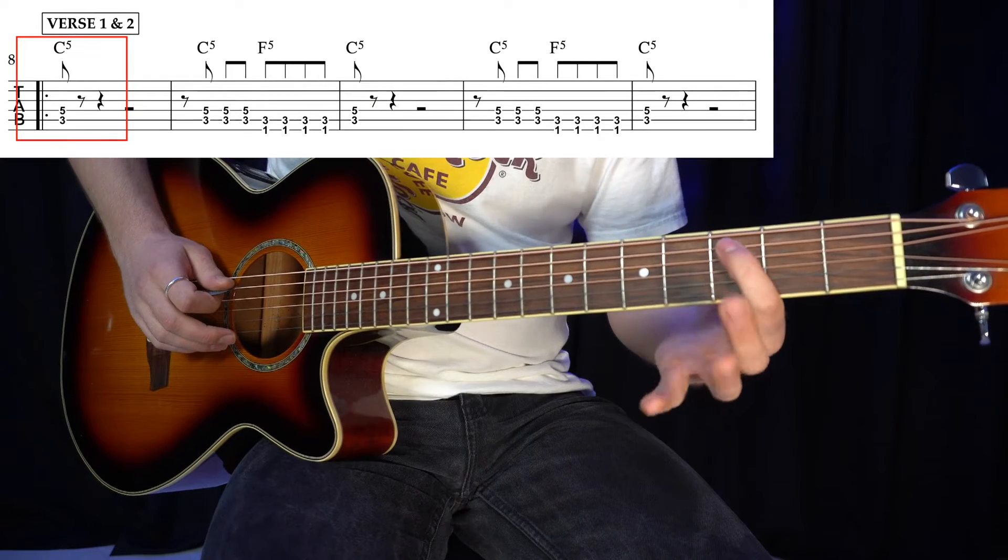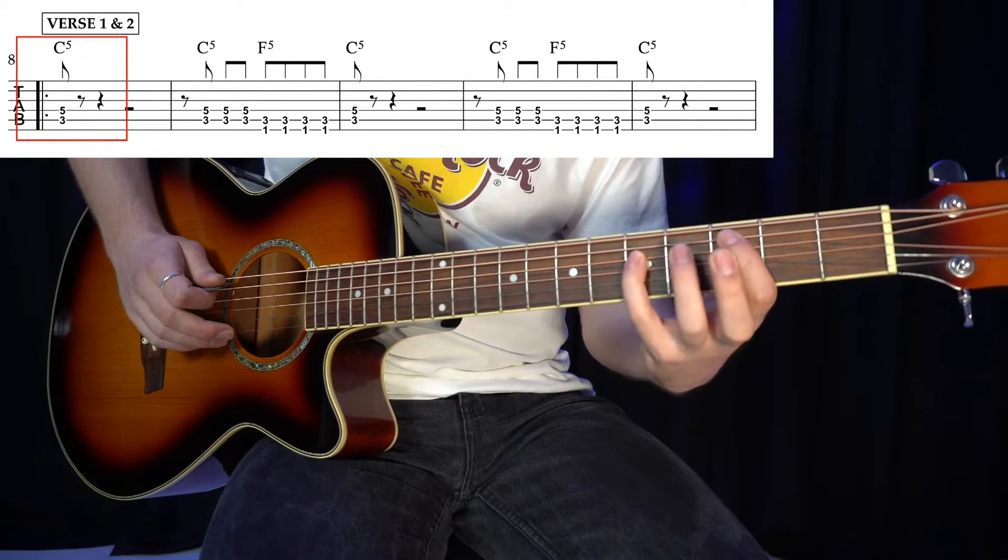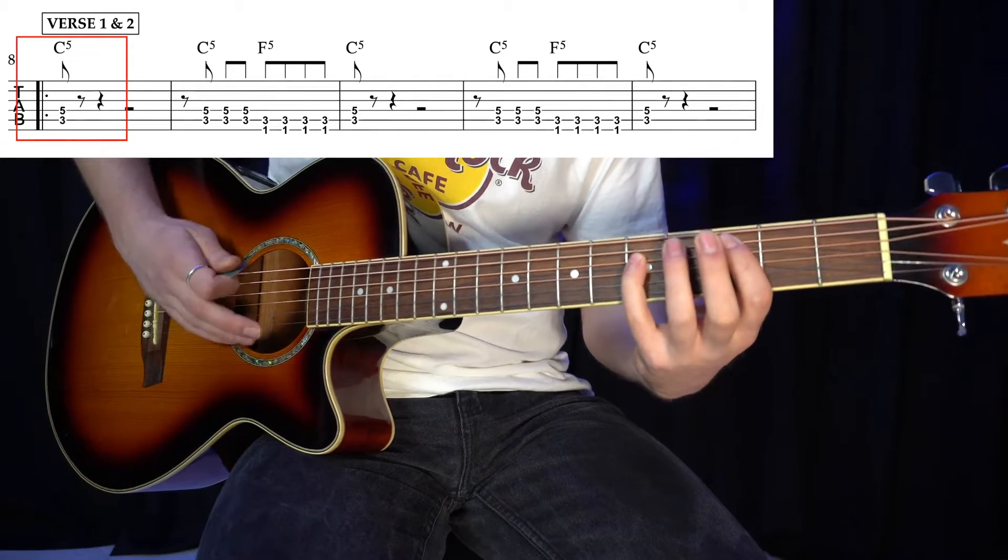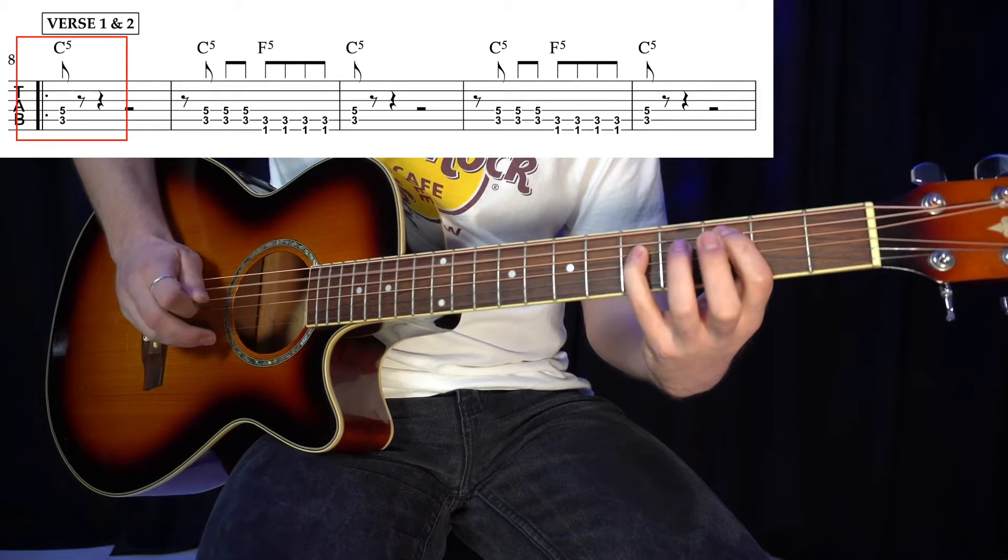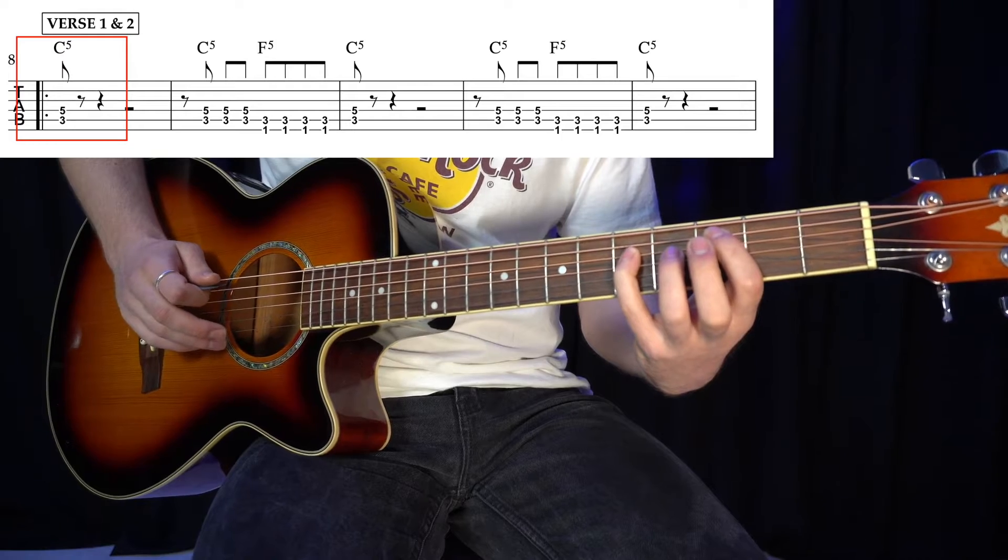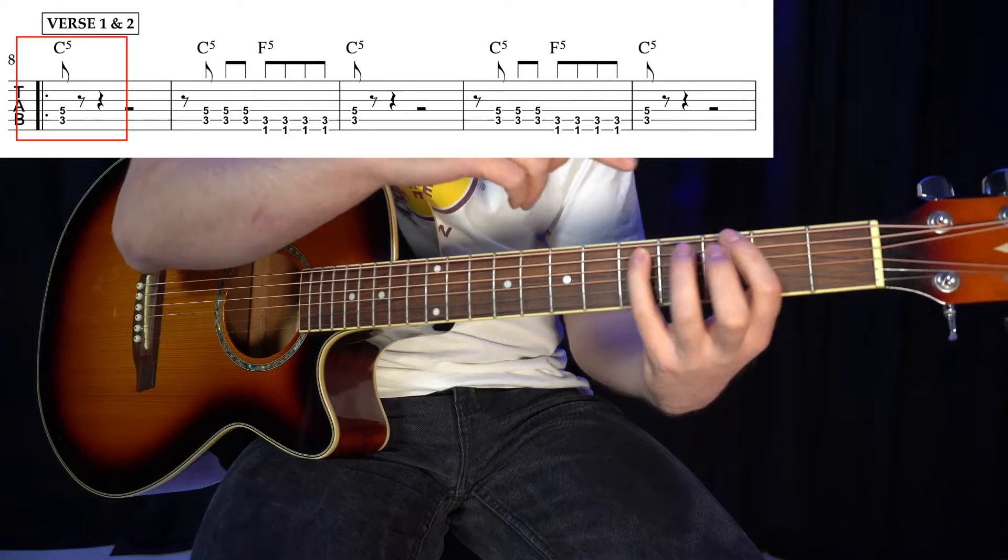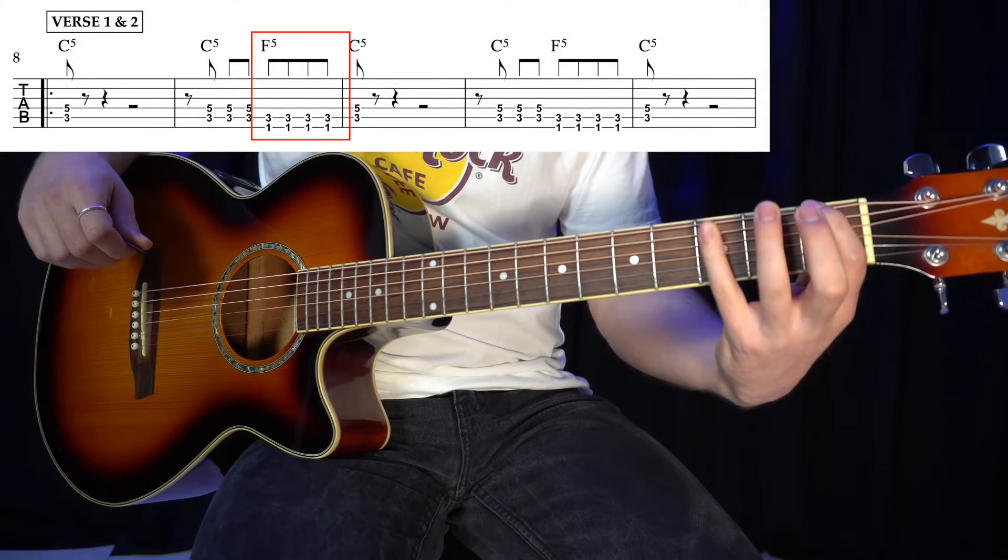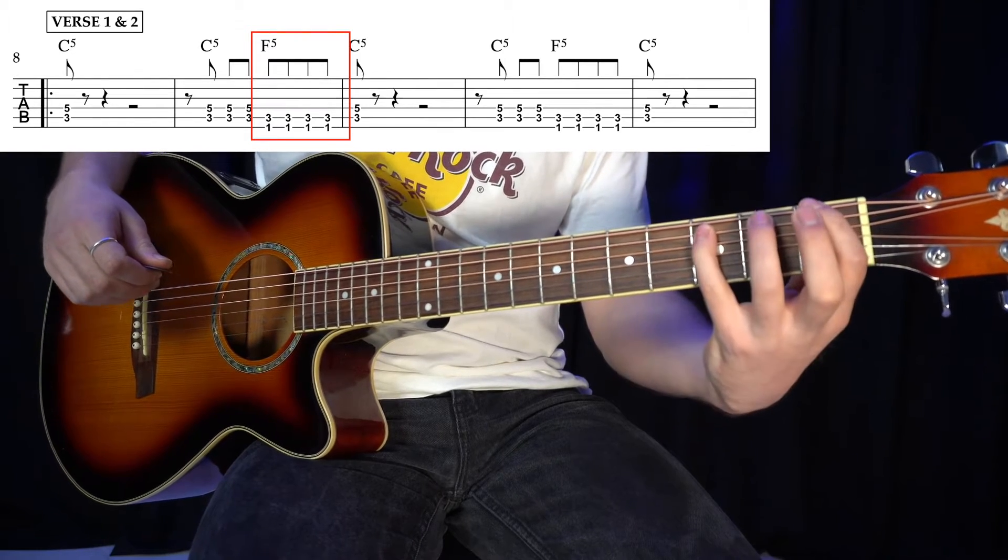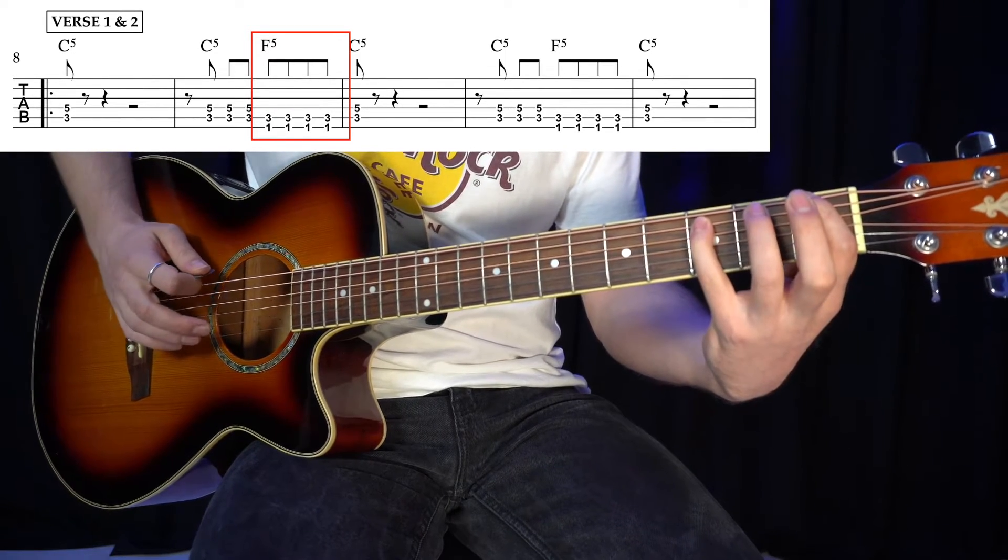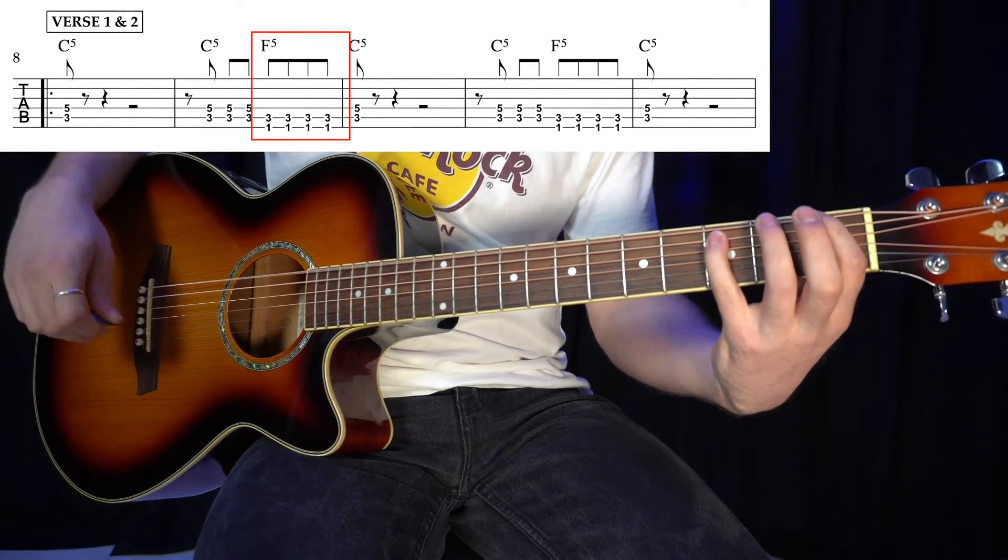So C5, you're going to go 3rd fret A with your 1st finger and then 5th fret D with your pinky finger. Just those two strings, no other strings, no open strings. Then we're going to move that shape onto the low E and slide it down to the 1st fret on the low E and then 3rd fret on the A. That's our F5, and again no open strings, just those two strings.